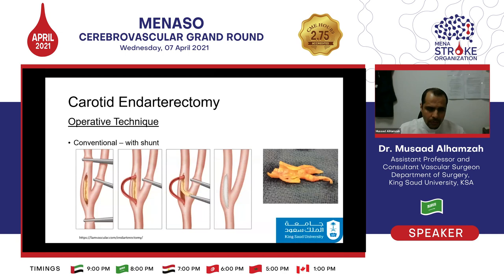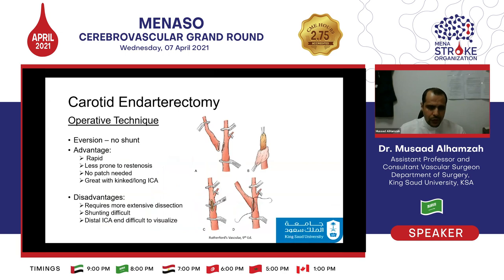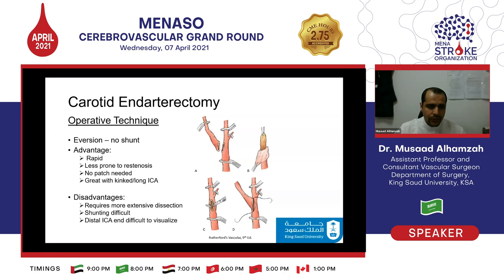The arteriotomy is then closed with a patch. This is as opposed to the eversion endarterectomy model, which I believe was introduced by Michael DeBakey initially, though neurosurgeons became very proficient with it early on. In eversion endarterectomy, you control the vessels, excise the origin of the internal carotid artery, peel all the plaque from it, perform a formal endarterectomy of the bulb itself, and then do a quick re-anastomosis and reattachment.